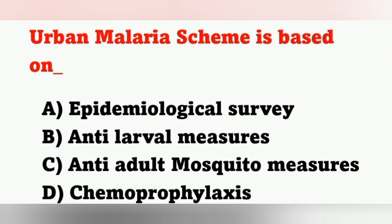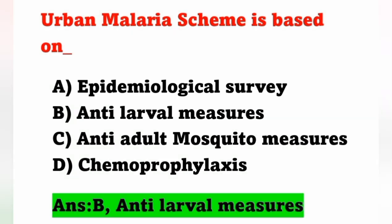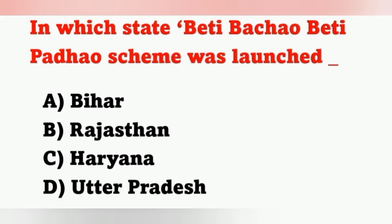Next question: Urban malaria scheme is based on? Options: A) Epidemiological survey, B) Anti-larval measures, C) Anti-adult mosquito measures, D) Chemoprophylaxis. Urban malaria scheme is based on anti-larval measures. Option B is the correct answer.